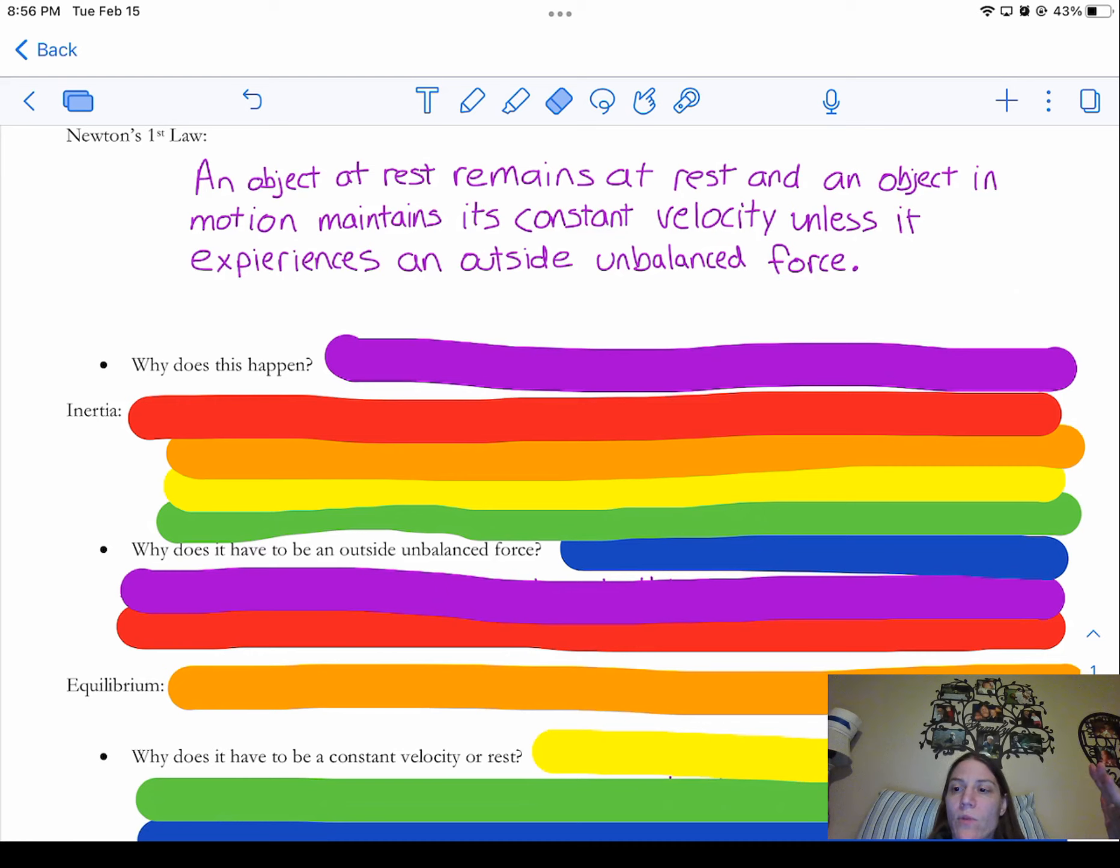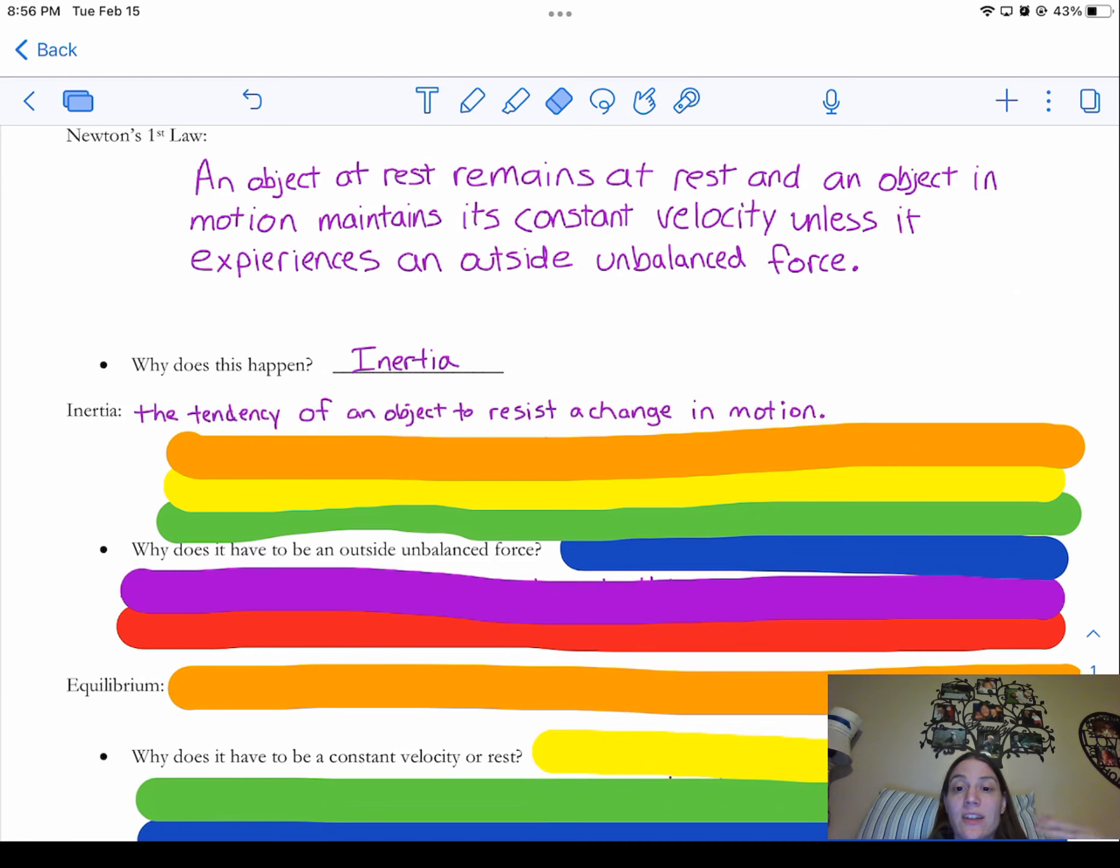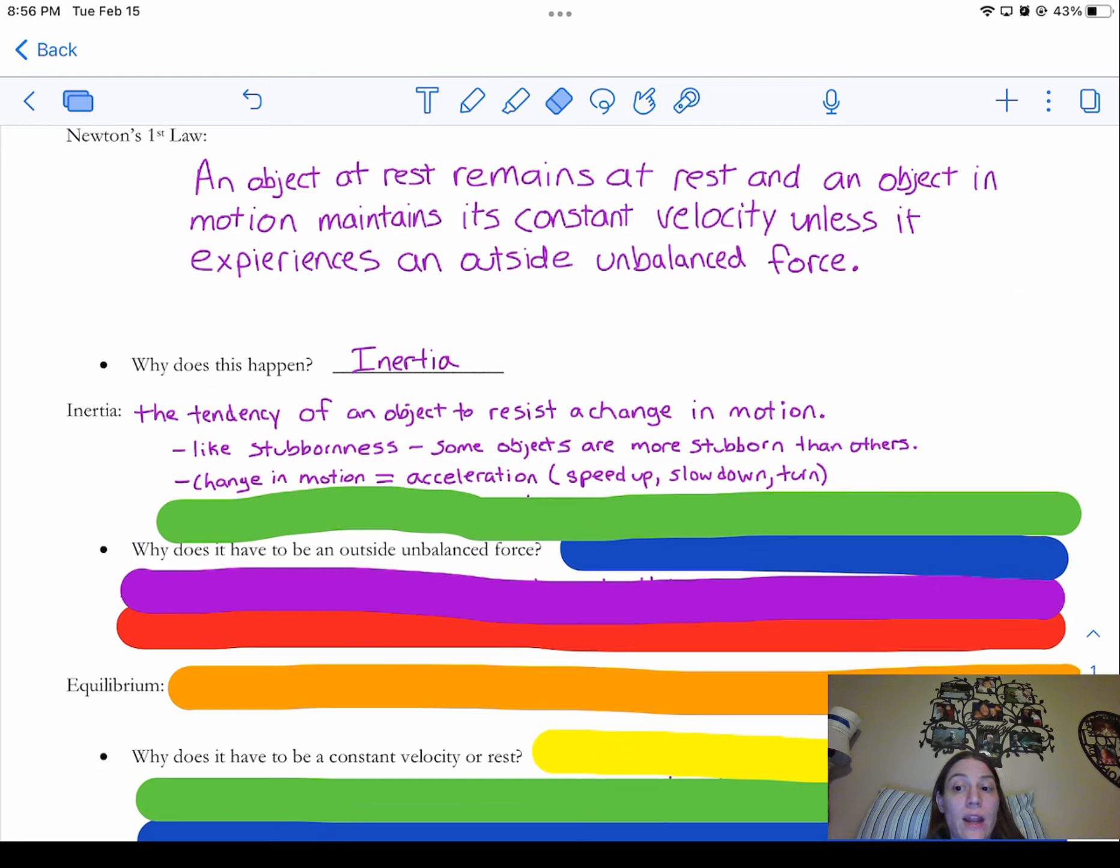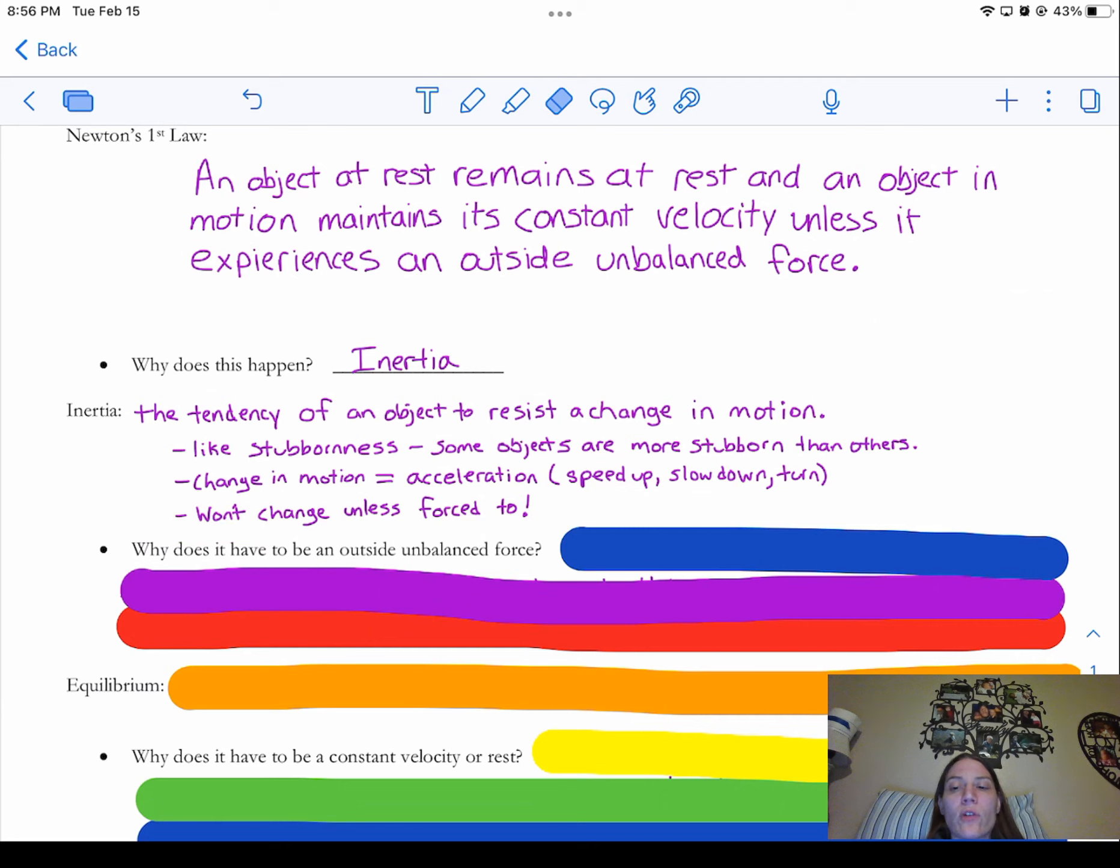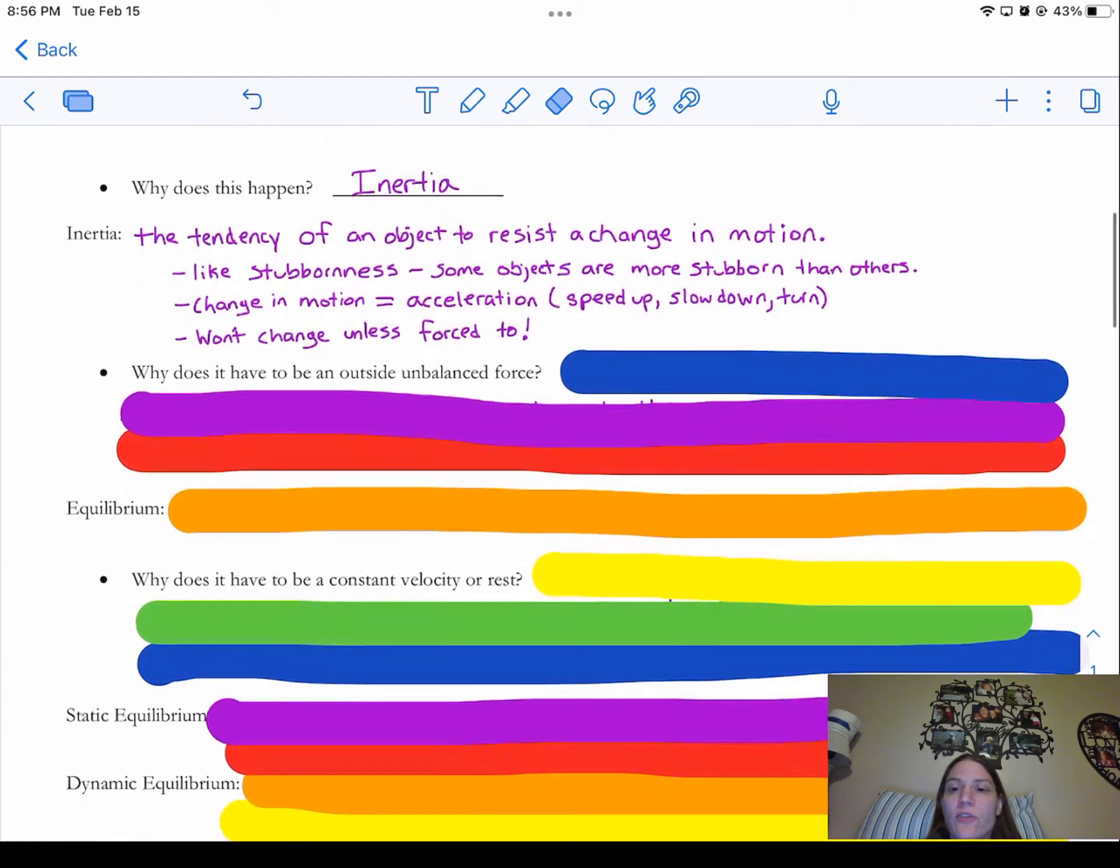So let's first start with why does this happen? Well, the reason it happens is because objects have inertia. Now inertia is the tendency of an object to resist a change in motion. It's kind of like a character trait, which is like stubbornness for people. Some objects are more stubborn than others, just like some people are more stubborn than others. And that means they don't want to change and they don't want to change their motion. Now we learned about changing motion already. That's when objects speed up or slow down or turn. Now objects will change, but only if they are forced to do it.